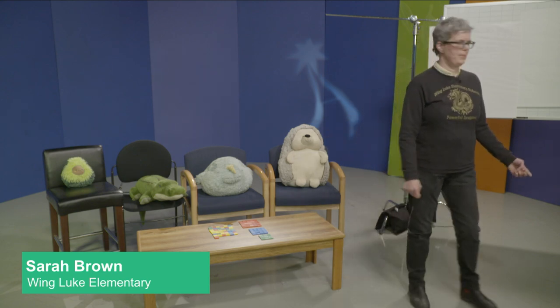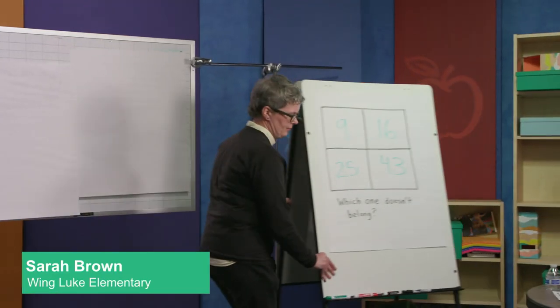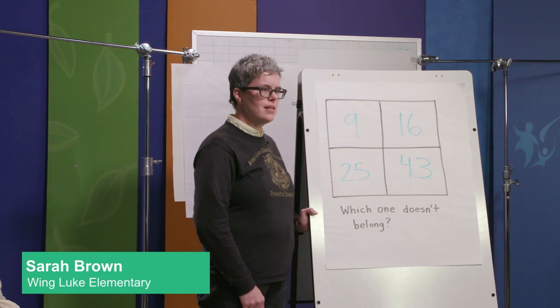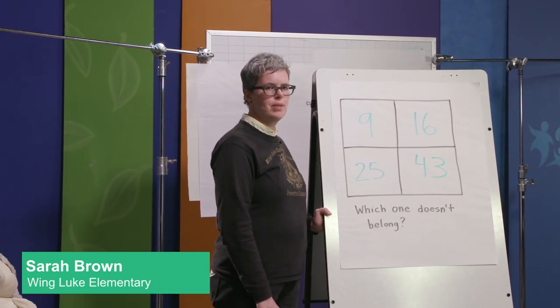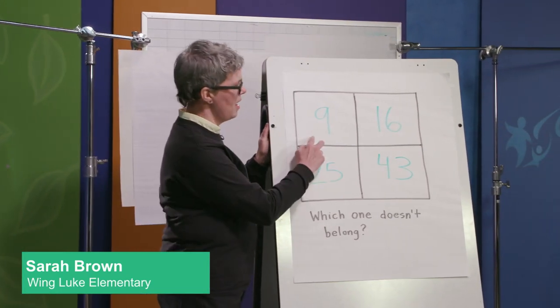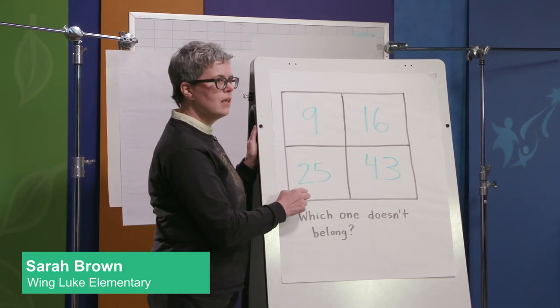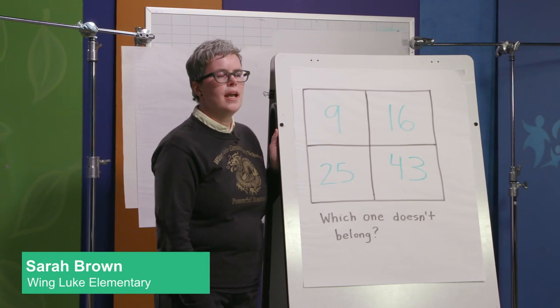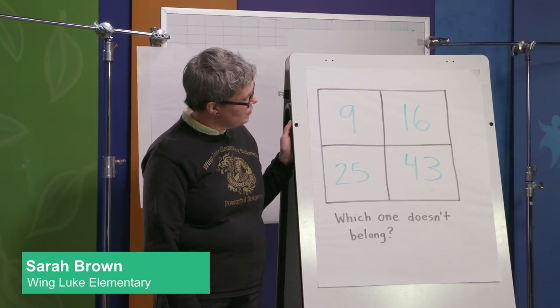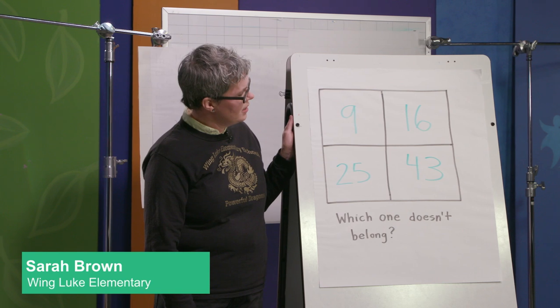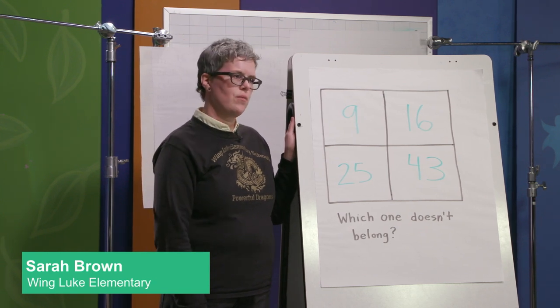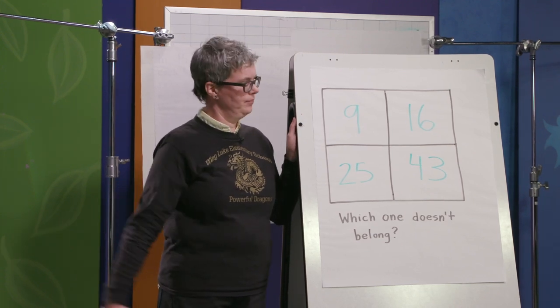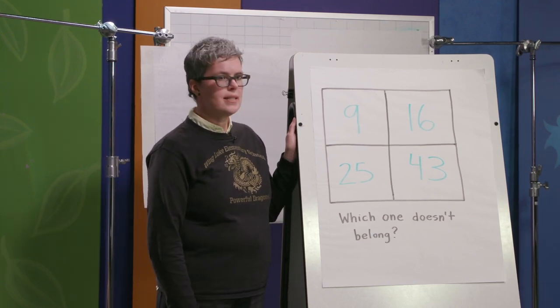We're going to start with a warm-up. So my question here is which one does not belong? So we have four numbers here: 9, 16, 25, and 43. And your task right now is to figure out which one of these numbers does not fit with the others. So I'm going to give you a moment to think about it and then we're going to see what your classmates think.